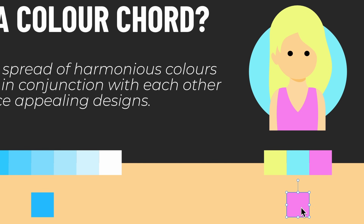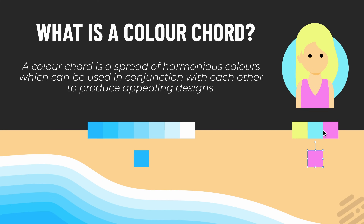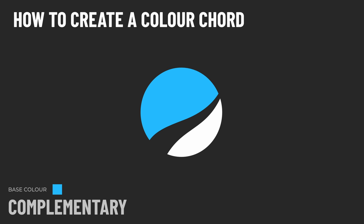In another example, I started with a pink base color, chose a color cord type, and it gave me a couple more colors that really work well together. Now let's actually get started and create a color cord. I have a simple logo here and on one half I've got the color blue — this is the base color I want to start with, and I want to create a color cord to help me fill in the other half.